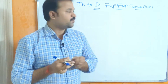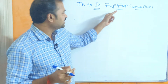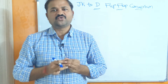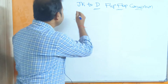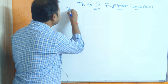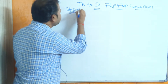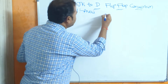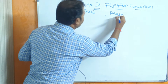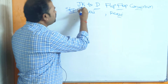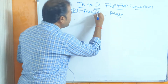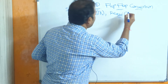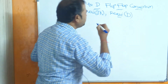Let us discuss JK to D flip-flop conversion. Here we have to follow 5 steps. Step 1 is we have to identify the available and required flip-flops. The available flip-flop, which is the input flip-flop, is the JK flip-flop. The required flip-flop, which is the output flip-flop, is the D flip-flop.